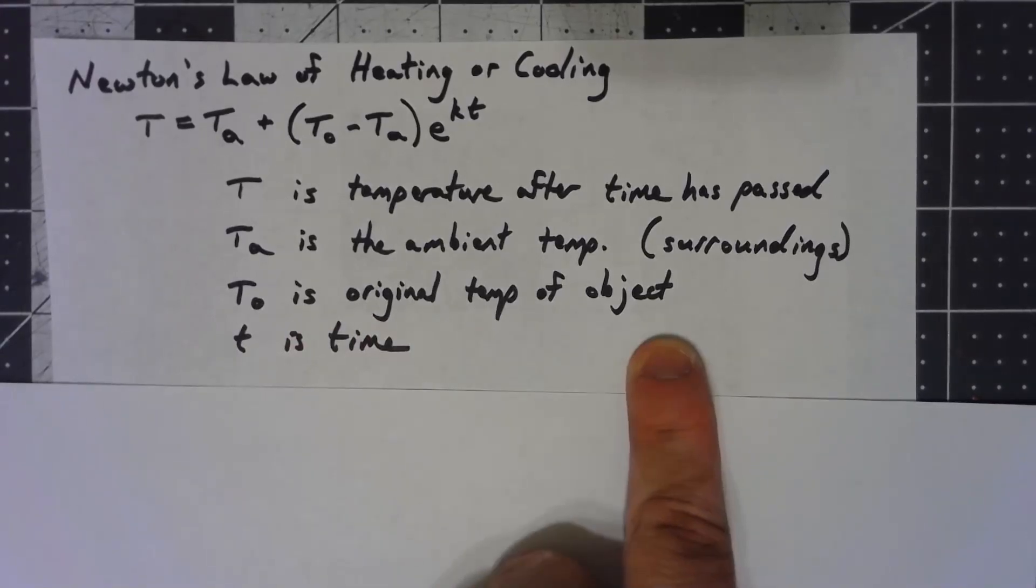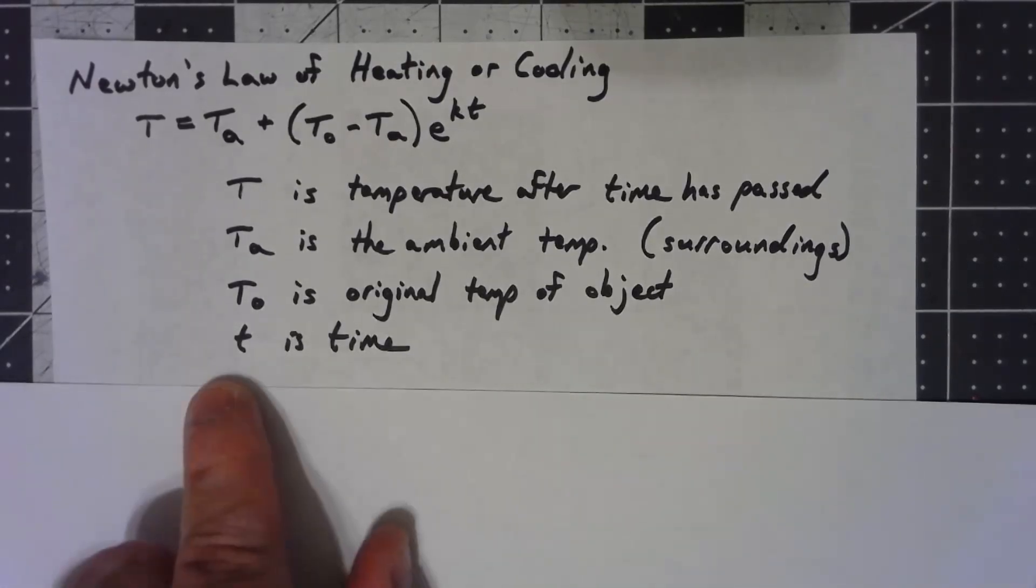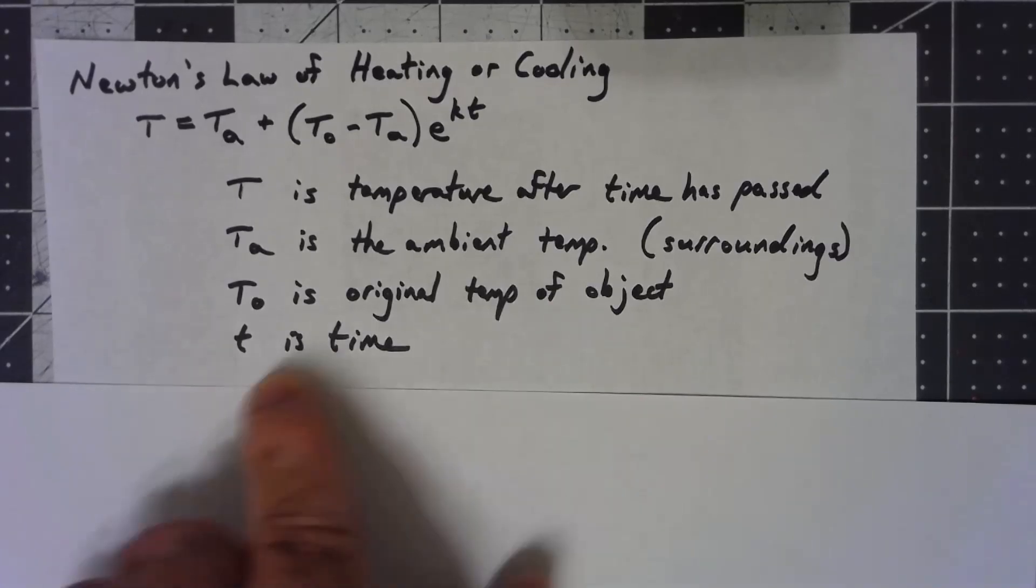T sub zero is the original temperature of the object. And again, if you're looking at the book in their formula, they're calling T zero something else, so be careful with that. And T is time.